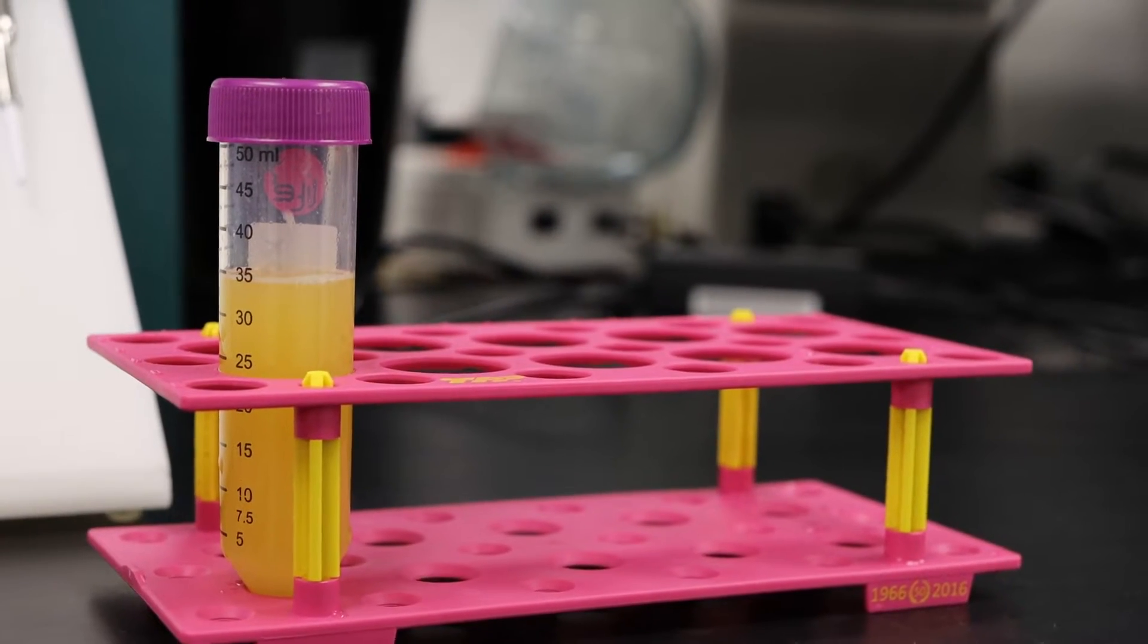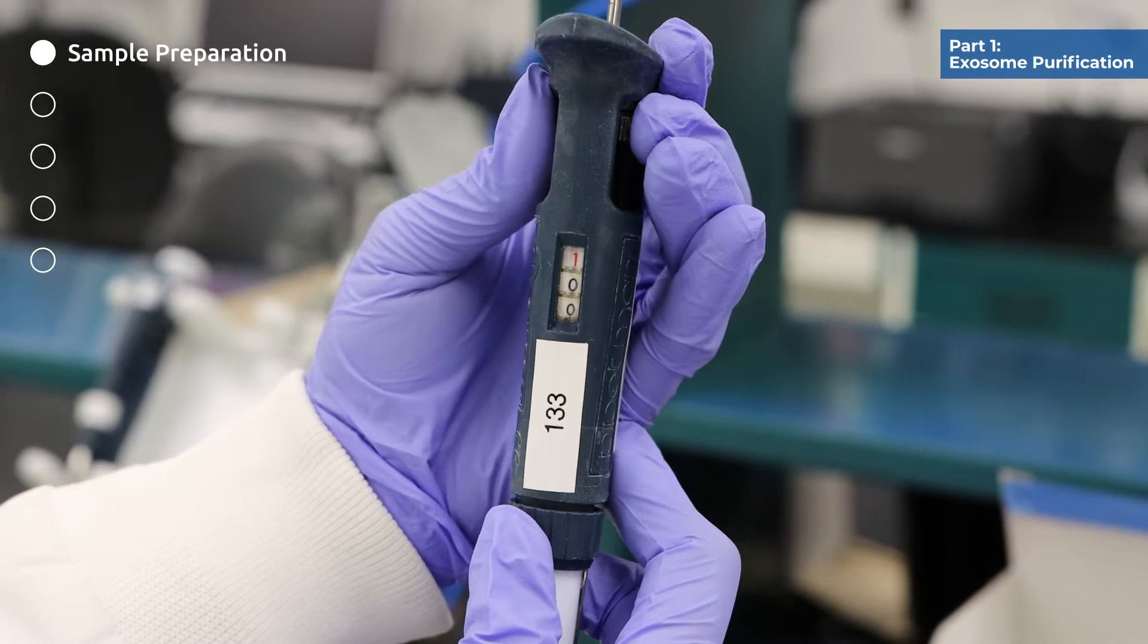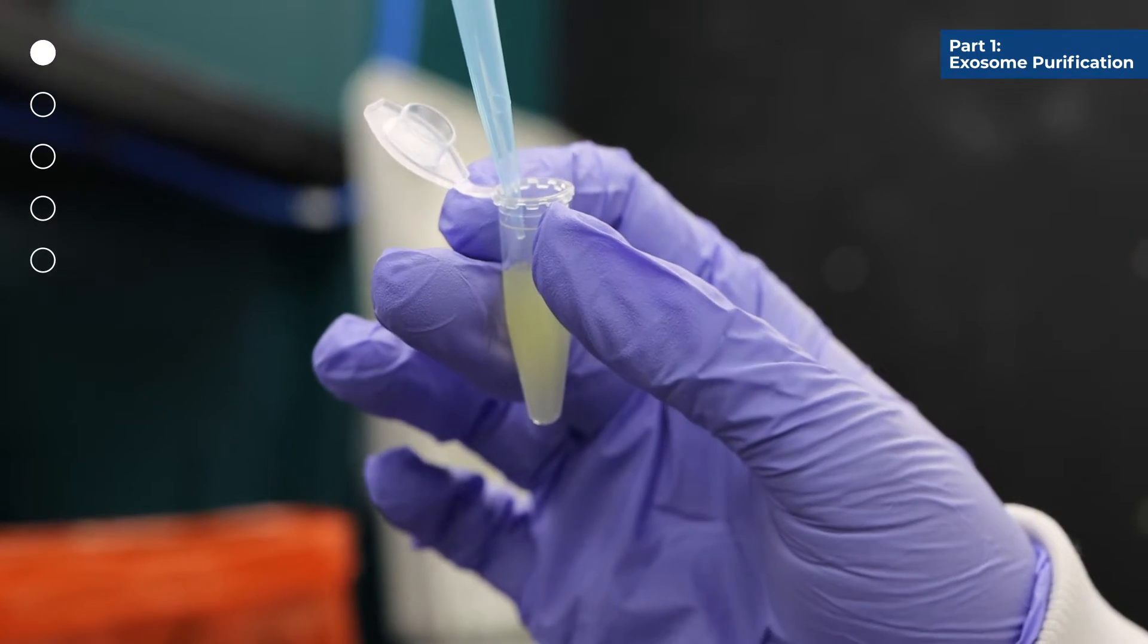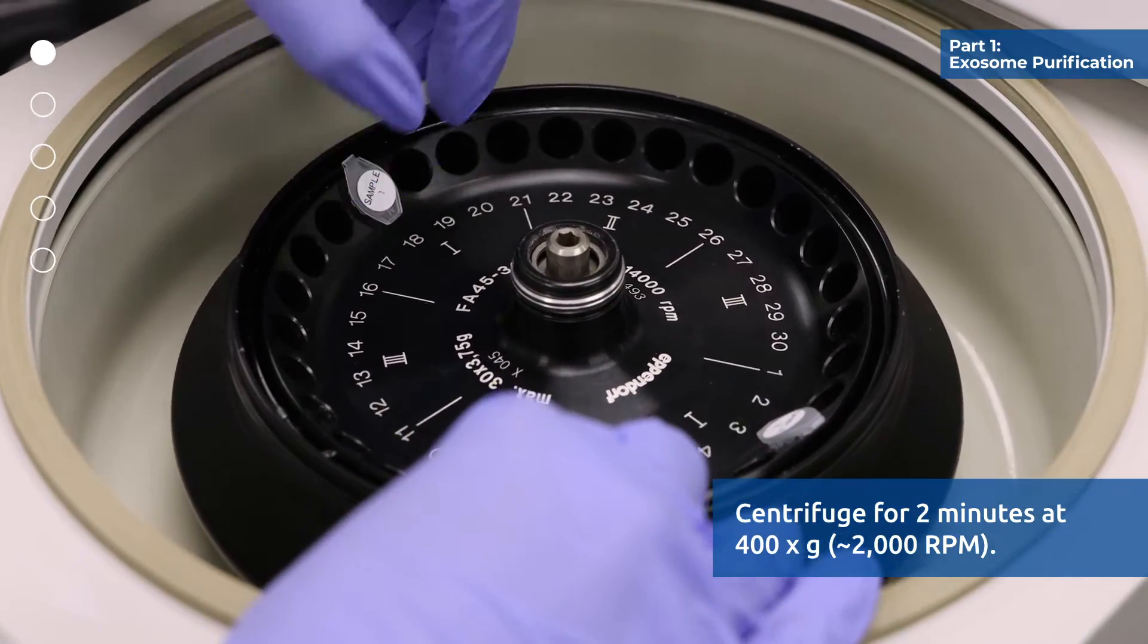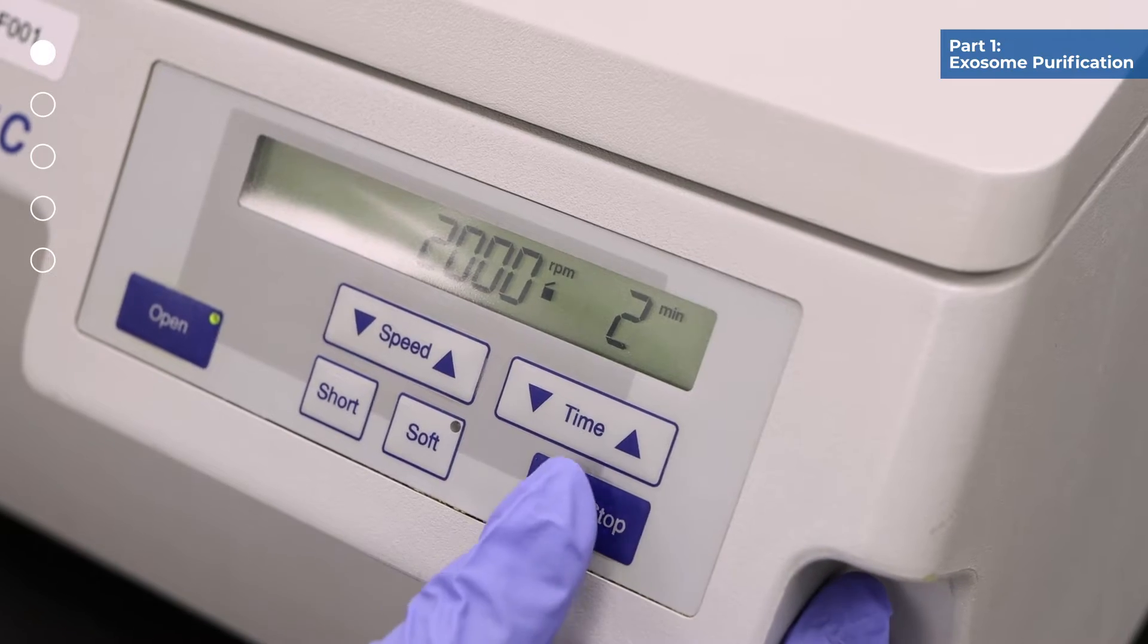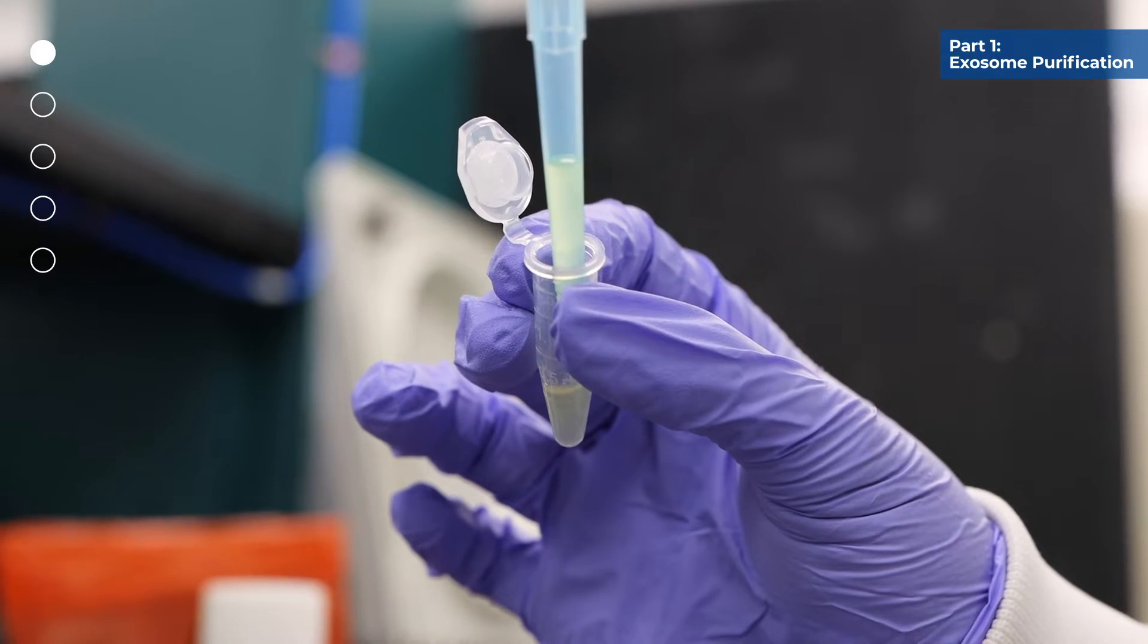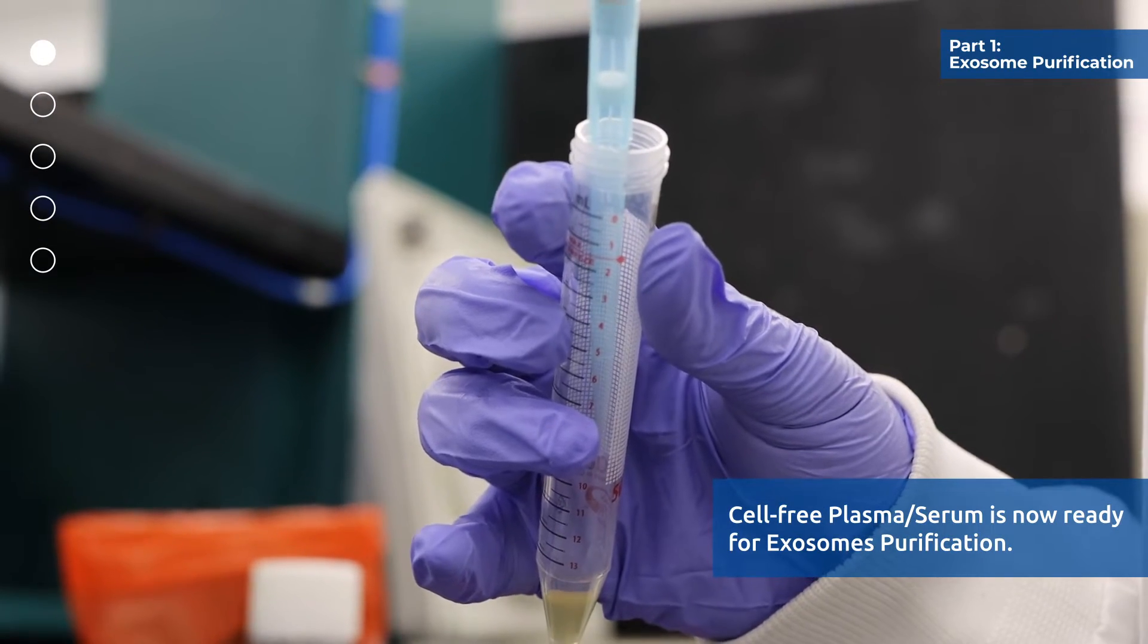Place your frozen plasma serum at 4 degrees Celsius to thaw. After thawing your plasma serum sample, aliquot the volume to be processed and centrifuge for 2 minutes at 400 g or 2000 rpm. After centrifugation, transfer the clear plasma serum supernatant to a fresh tube. Cell-free plasma serum is now ready for exosome purification.